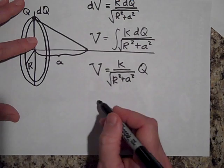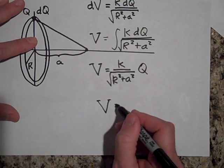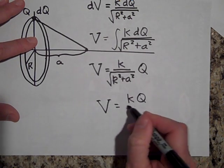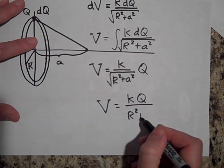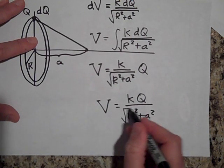So that's the voltage of a ring if you're on the axis. It's K Q over R squared plus A squared, square root it.